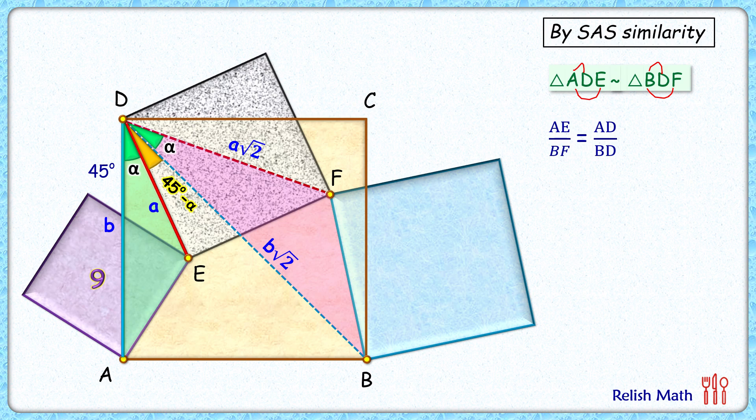In this equation, AE length is √9, which is the side length of the purple square, or 3 cm. So 3/BF equals AD/BD. AD length is b and BD length is b√2, so we have 3/BF = b/(b√2). Here b cancels out, and cross-multiplying gives us BF = 3√2 cm.